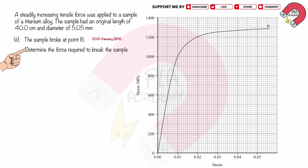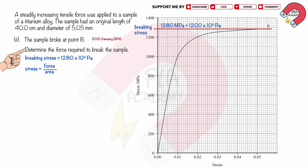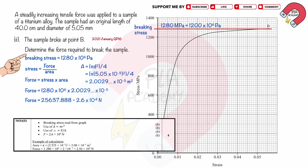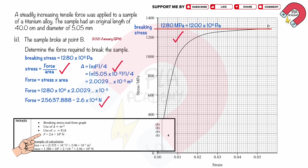Part B2: the sample broke at point B. Determine the force required to break the sample. The breaking stress on the graph is 1.280 × 10⁶ pascals. Stress equals force F over cross-section area A, so force equals stress multiplied by cross-section area. Cross-section area A equals π·D² over 4; substituting diameter D = 5.05 × 10⁻³ meters, A = 2.0029 × 10⁻⁵ square meters. Substituting stress and area, we get force equals 2.6 × 10⁴ newtons to two significant figures. You will get 4 marks for: reading breaking stress from the graph, using A equals π·r² (or π·d²/4), using stress equals F over A, and a correct force of 2.6 × 10⁴ newtons.